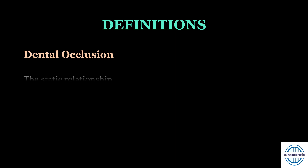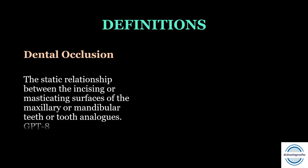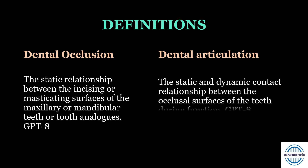Before proceeding, let us be familiar with two important definitions. First is dental occlusion — it is the static relationship between the incising or masticating surfaces of the maxillary or mandibular teeth or the tooth analogs. The second is dental articulation, which is the static and dynamic contact relationship between the occlusal surfaces of the teeth during function. These two definitions are often asked in the viva.